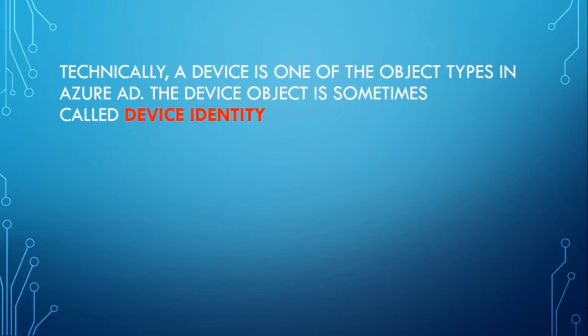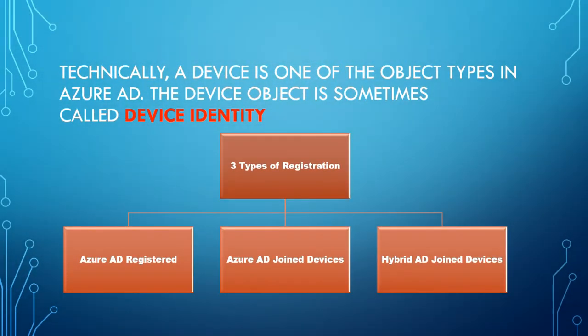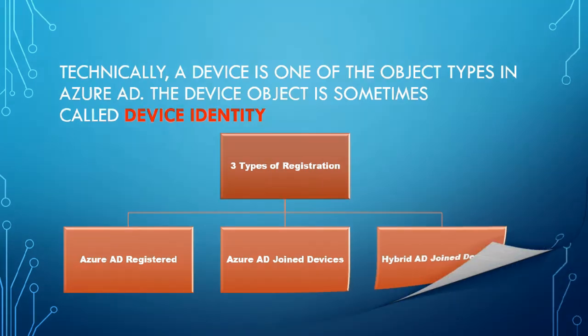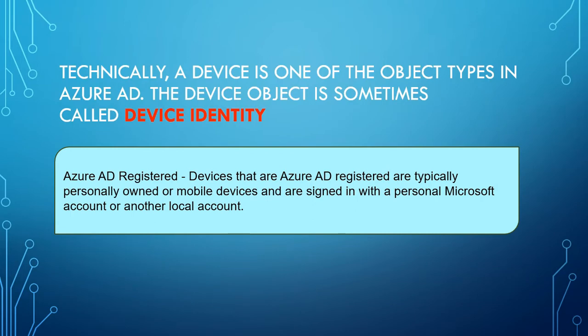So device identities pahalaam ketithadha, three types are vandhu register agadhu. First vandhu Azure Active Directory Registered Devices, renda vandhu Azure Active Directory Joined Devices, muna vandhu Hybrid Azure Active Directory Joined Devices. Neng vandhu in the registration details vandhu Intune portal la pahalaam.